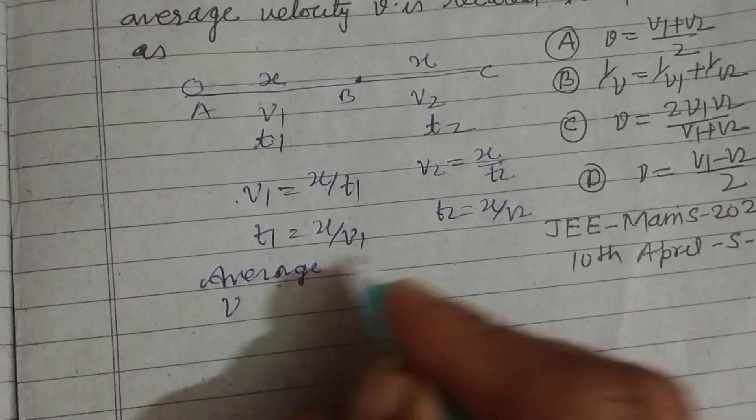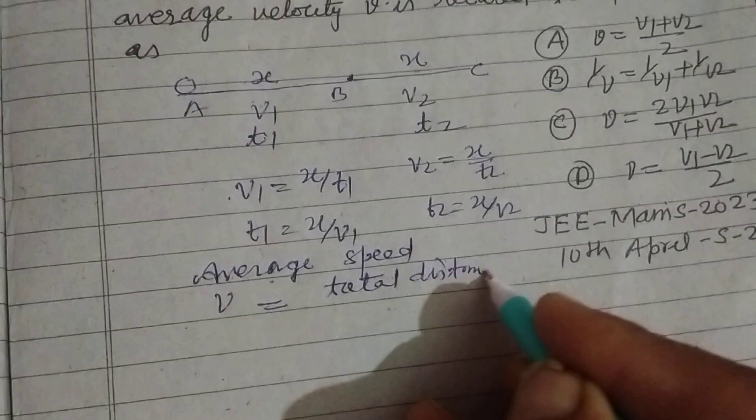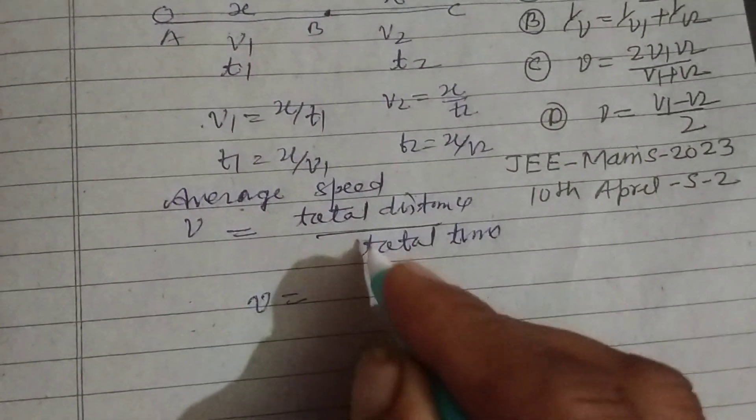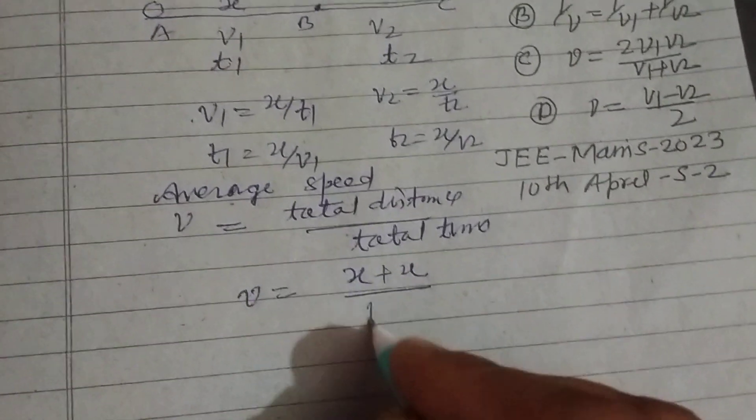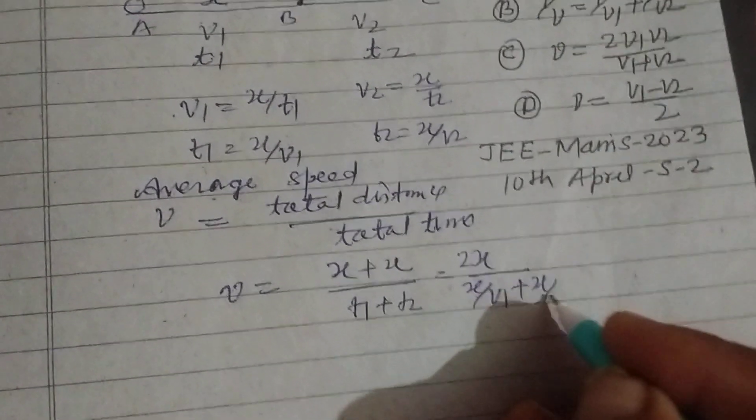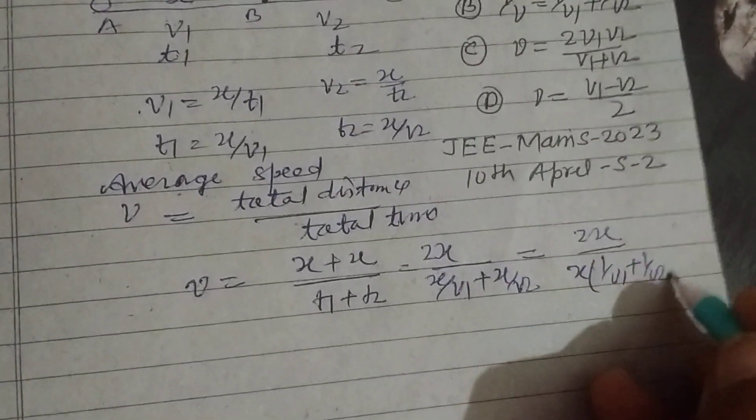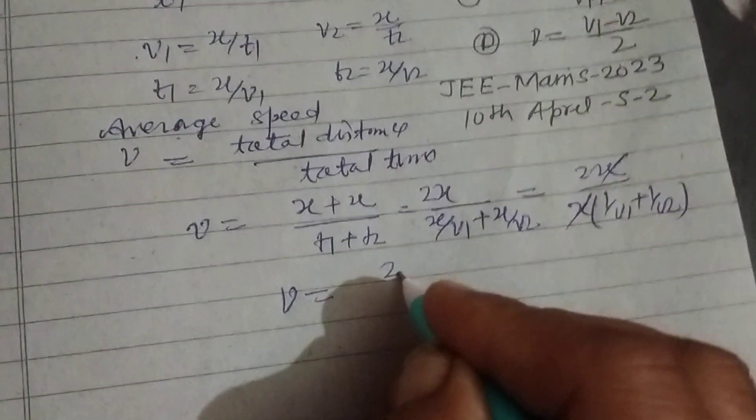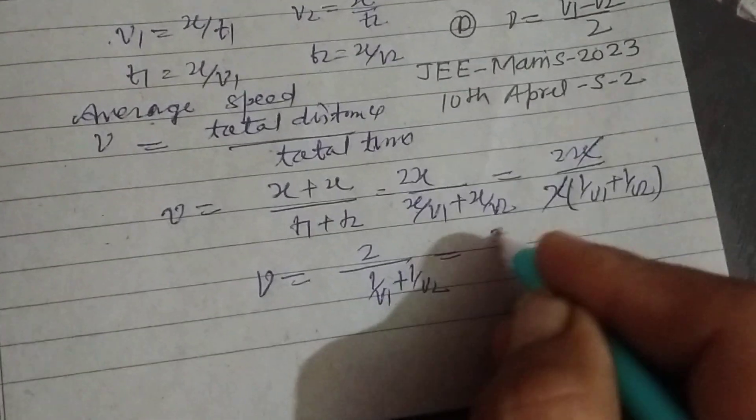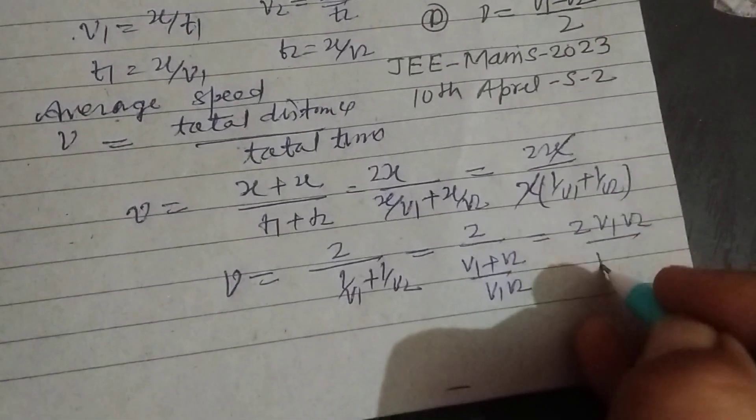So average speed v equals total distance upon total time. v equals x plus x over t1 plus t2. So 2x over x upon v1 plus x upon v2. Here x is common: 2x over x times 1 upon v1 plus 1 upon v2. x cancels, so v equals 2v1v2 upon v1 plus v2.